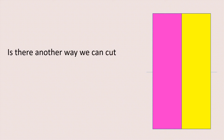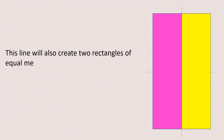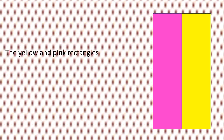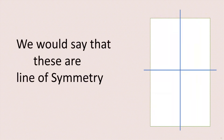Is there another way we can cut this figure into two equal parts? Yes, the line will also create two rectangles of equal measure. The yellow and pink rectangles are of identical size and shape. We would say that these are lines of symmetry.